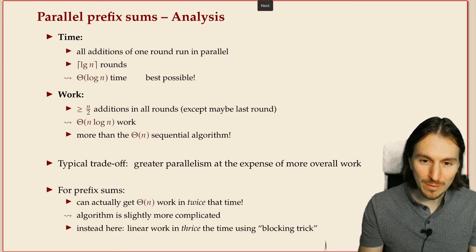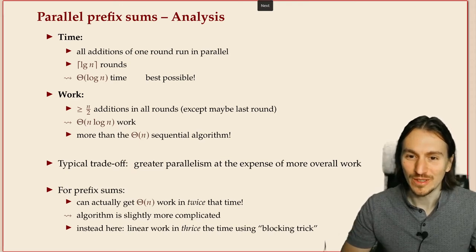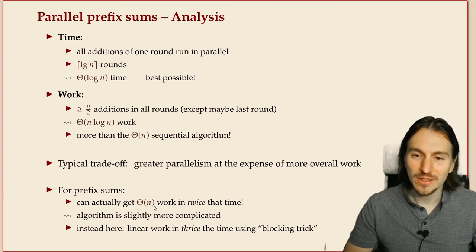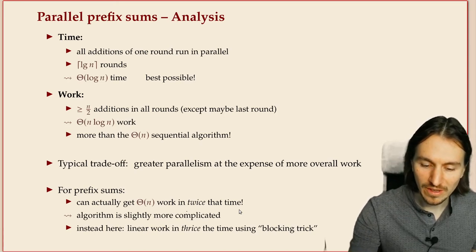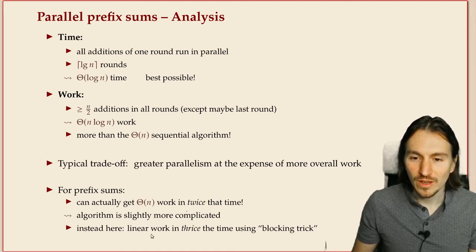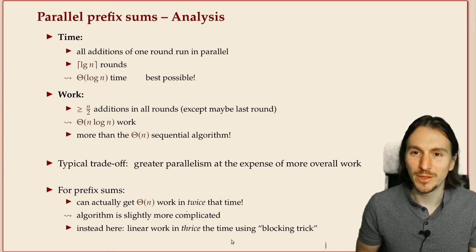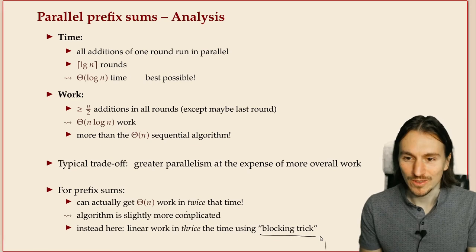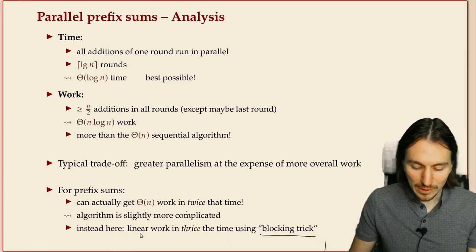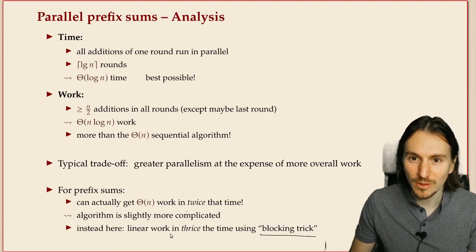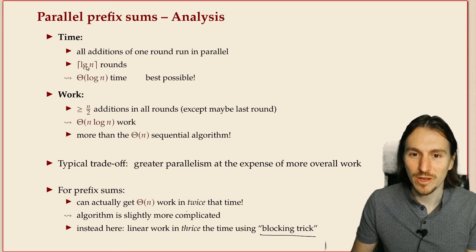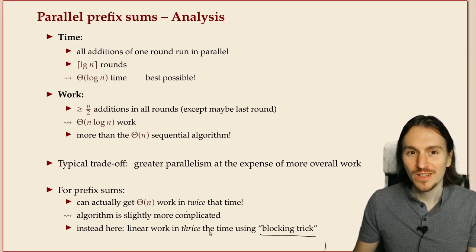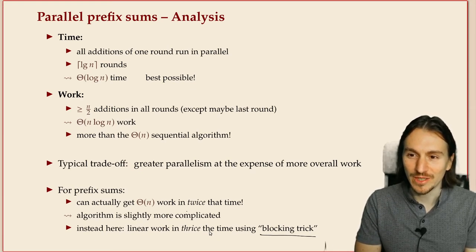For this simple problem we can actually get rid of the overhead in work. We can do linear work and only double the parallel time. That algorithm is a bit more complicated, so I'm not going to show it, because there's an alternative which is conceptually very simple and also a building block — a technique that often works for improving the work in parallel algorithms — and that's breaking things into blocks. We also achieve linear work, so we will get a work-efficient parallel prefix sum algorithm, and the time will be three times the best possible: three times log n rounds.